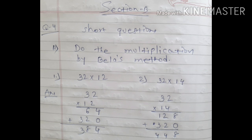32 multiply 12. We'll start with Bela's method: 2 times 2 is 4, 2 times 3 is 6. Then we put one zero, okay? And then 1 times 2 is 2, 1 times 3 is 3. Then we do addition.